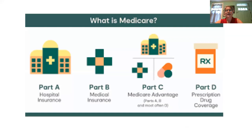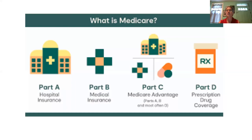Medicare has four parts. Part A covers inpatient services. Part B is your medical insurance — for care as an outpatient — and is the primary section we're going to discuss as it covers durable medical equipment. Part C is a Medicare Advantage plan, which provides Medicare benefits through a private sector health insurer — this is not the same as a Medigap or Medicare supplement. Part D covers prescription drugs. Primarily we're going to be dealing with Part B for equipment.